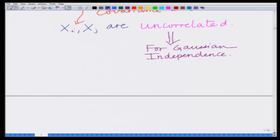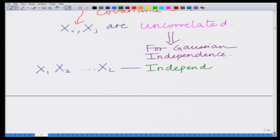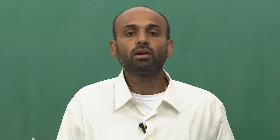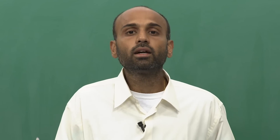Therefore, x₁, x₂, ..., xₗ are independent and identically distributed (i.i.d.) Gaussian random variables. Each has mean 0, variance σ², and the covariance between any two is 0 — meaning they are uncorrelated and, since they are Gaussian, also independent. We are thus considering L i.i.d. Gaussian random variables.